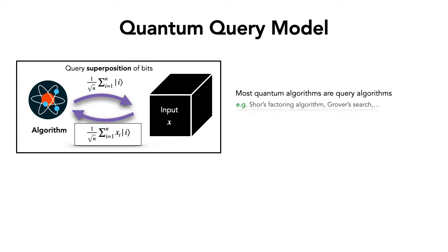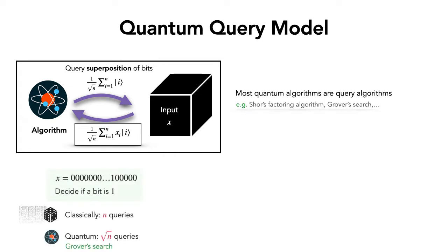To make this concrete, consider the following: given a bit string of 0s and 1s, check whether there is a 1 — compute the OR of these bits. Classically this requires n queries, you have to read all input bits. But Grover search can solve the same problem with square root n queries, so polynomially faster.